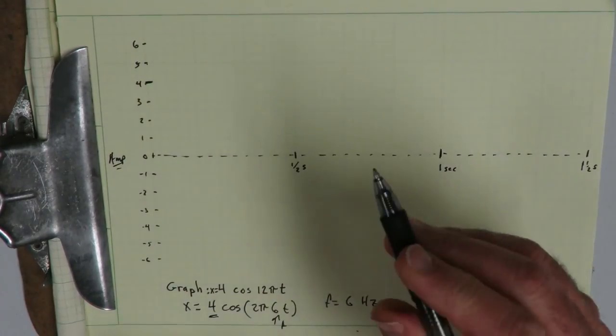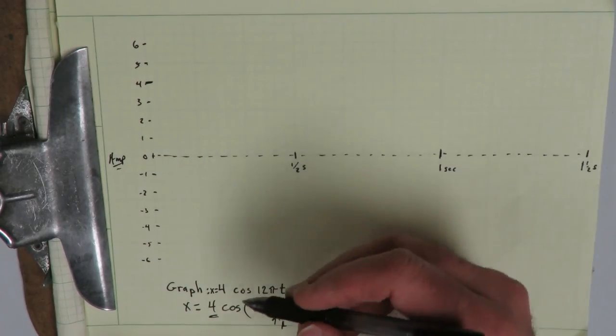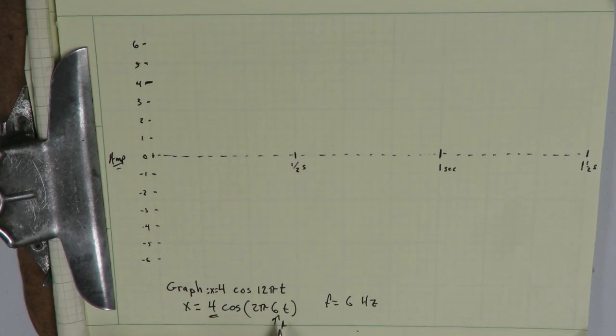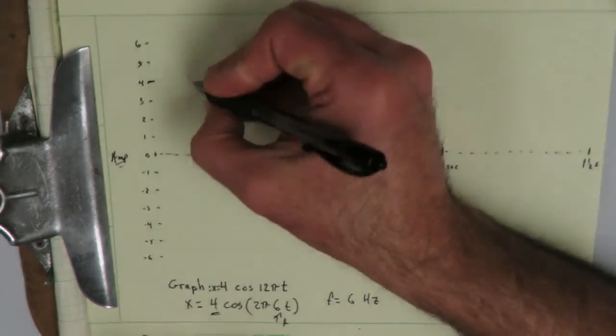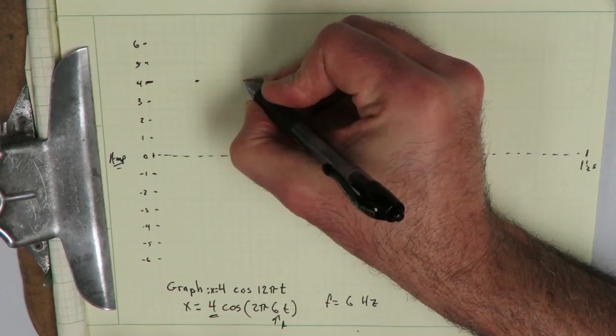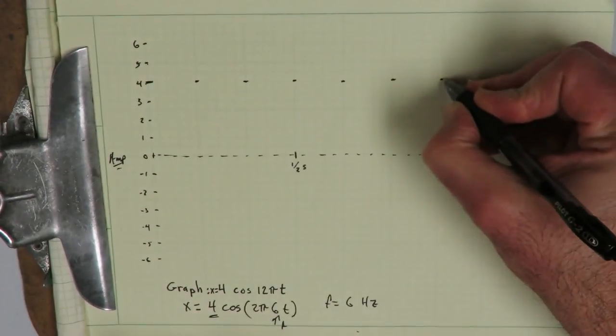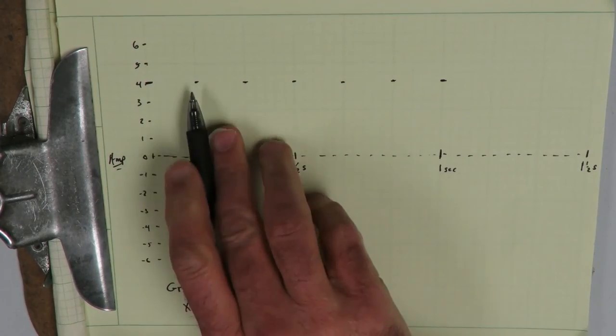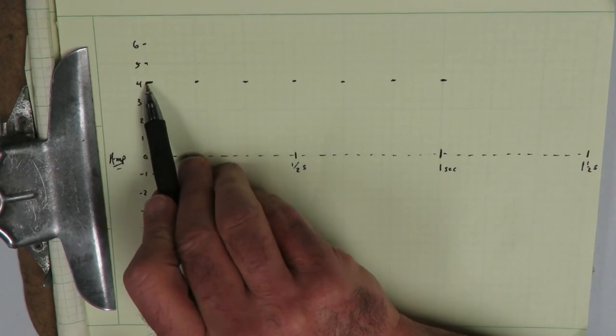Now at the extreme negative, it's going to go to negative 4. We need to figure out where that is, but we'll get to that. The main thing right now is that the frequency is 6 hertz, which means we're going to have 6 crests during 1 second. So we're going to have a crest here: 1, 2, 3, 4, 5, 6. One second, 6 complete cycles in that 1 second. So that's going to be the crest.